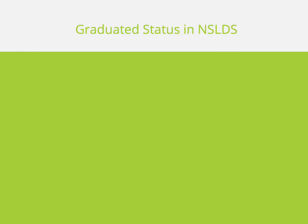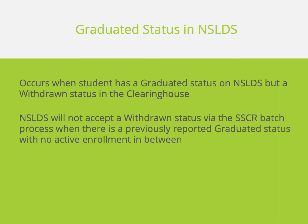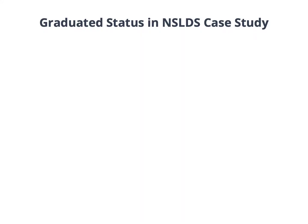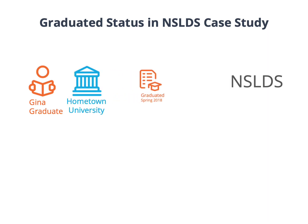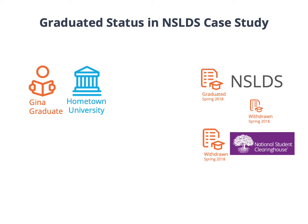Our next scenario occurs when a student has a graduated status in NSLDS but a withdrawn status in the clearinghouse. Error 32 occurs because NSLDS processes will not allow them to ingest a withdrawn status through the SSCR batch process when there is a previously reported graduated status and there is no active enrollment in between. Gina Graduate recently graduated from Hometown University. The graduated status was updated directly in NSLDS; however, a withdrawn status was reported to the clearinghouse. After reporting this withdrawn status to NSLDS, an Error 32 was returned.